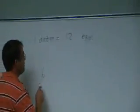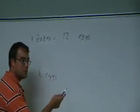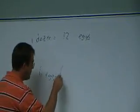Let's just suppose that we have six eggs. How many dozen we got? Half a dozen. Wonderful.